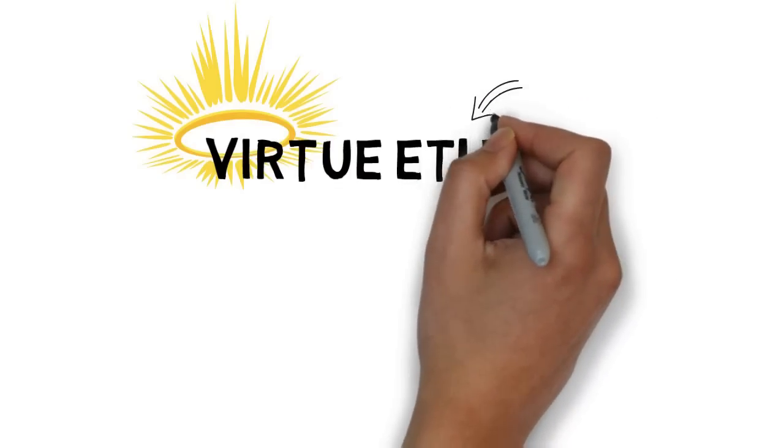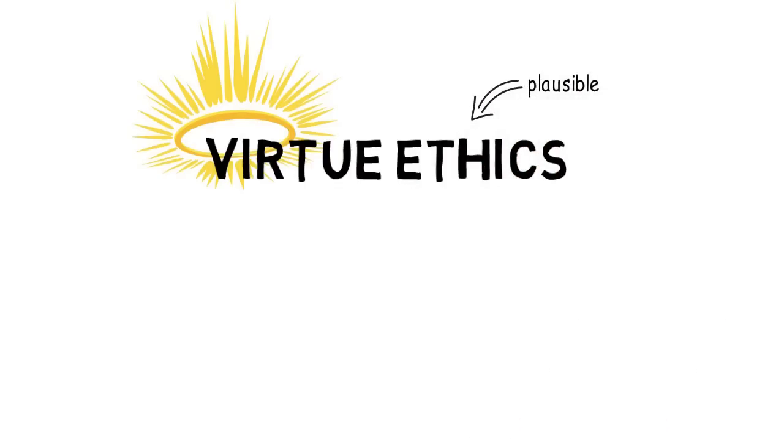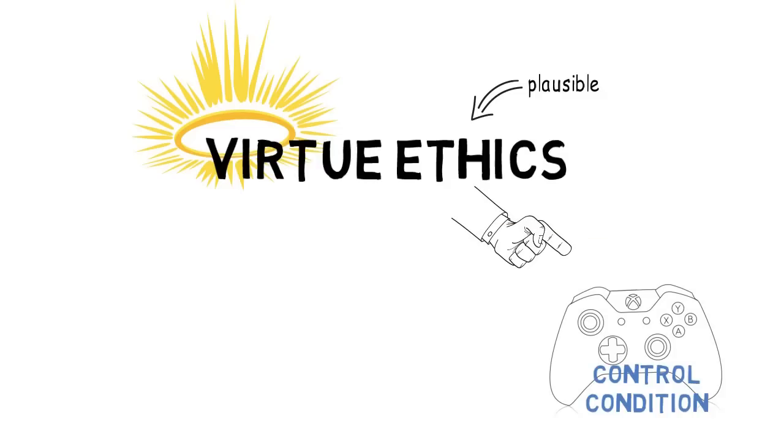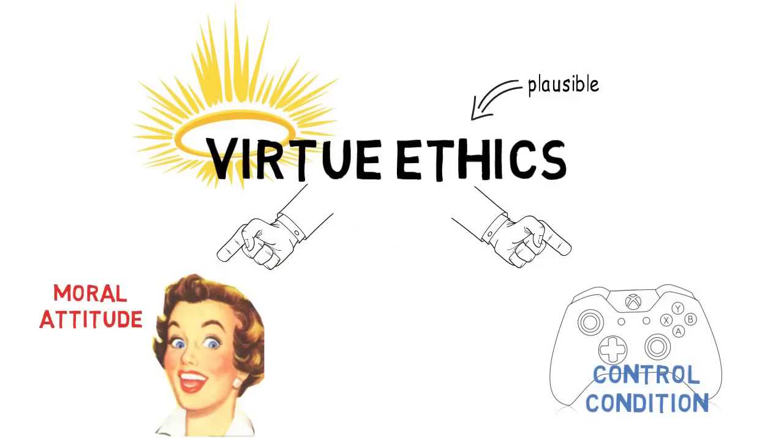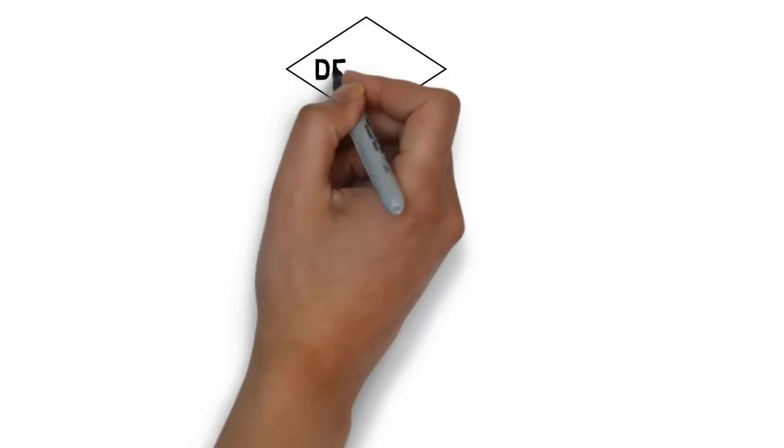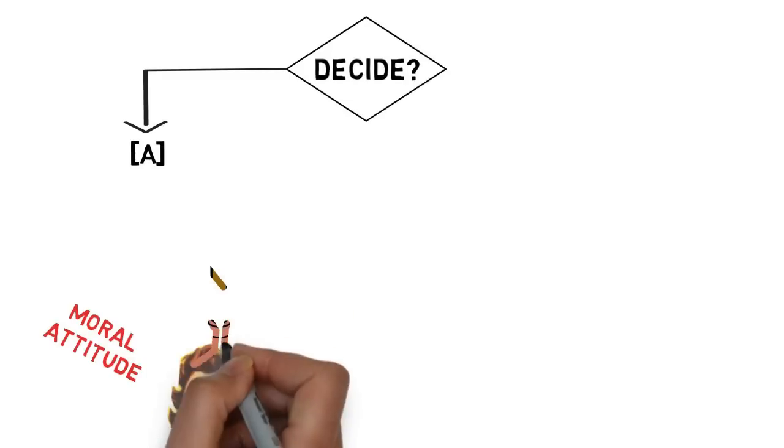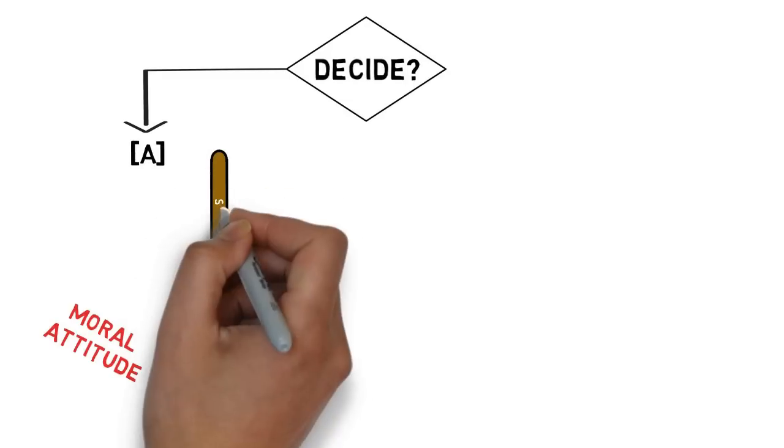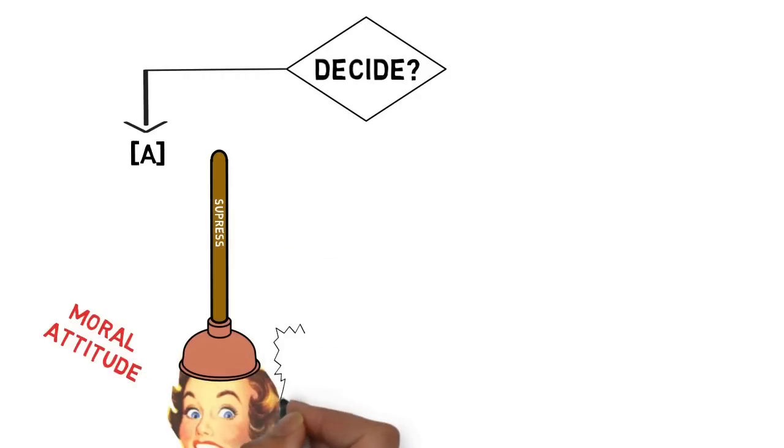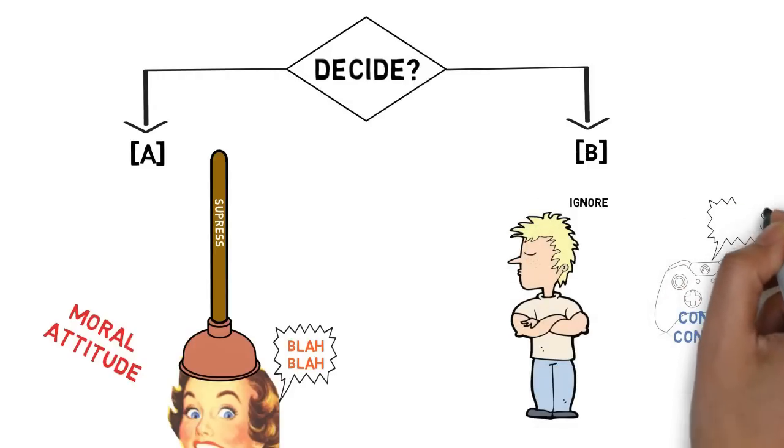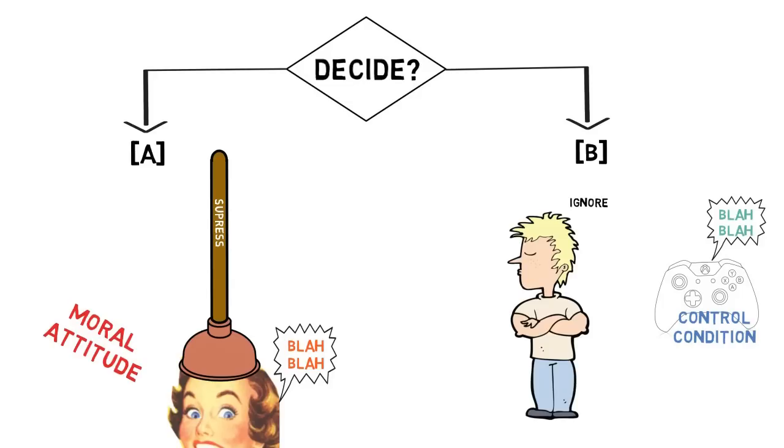Virtue ethics would be plausible, despite moral luck, if we could somehow tell when to heed the control condition and reject our natural attitudes, and when to heed our attitudes and reject the control condition. That is, if we had some means to decide when, or when not, to suppress our intuitive desires to apportion praise and blame on the basis of results, circumstances or matters of constitution that are beyond personal control, and when to ignore the control condition and proceed to praise or blame the person, regardless of results, circumstances or matters of constitution that are beyond their control.